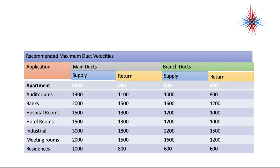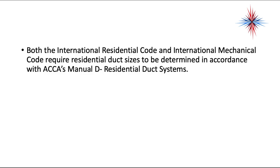Velocity also has a lot to do with duct pressures and CFM, which we'll talk about in a minute. Both the International Residential Code and the International Mechanical Code require residential duct sizes to be determined in accordance with ACCA's — Air Conditioning Contractors of America — Manual D Residential Duct Systems. This is code; ductwork has to be sized appropriately.